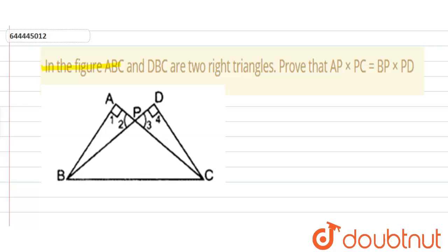The question is: In the figure, ABC and DBC are two right triangles. Prove that AP × PC is equal to BP × PD. So in triangle APB...